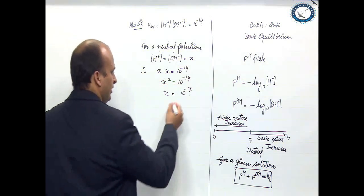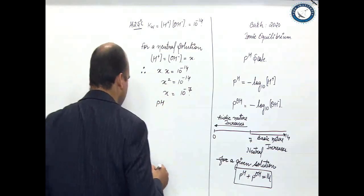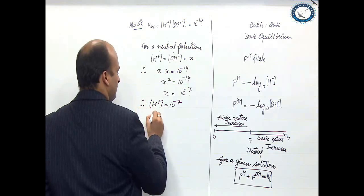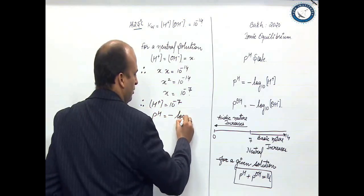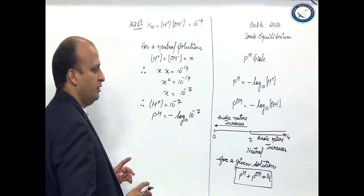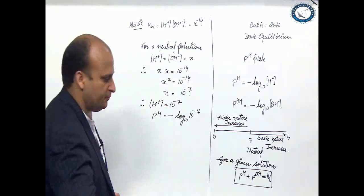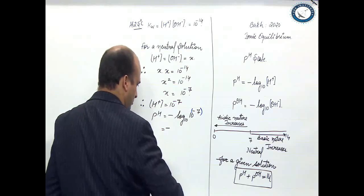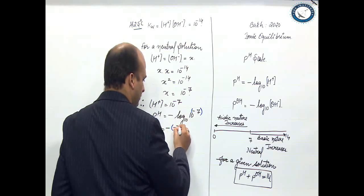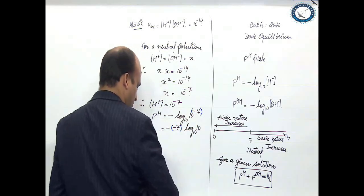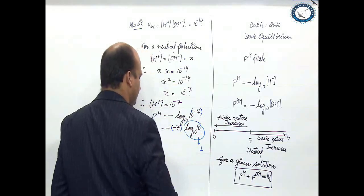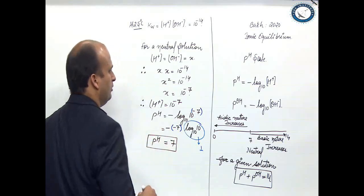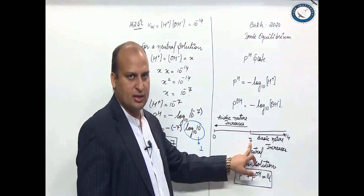Thus x comes out to be 10 raise to the power minus 7. So if x is 10 raise to the power minus 7, the H plus concentration is equal to 10 raise to the power minus 7. Therefore, pH is equal to minus log to the base 10 of 10 raise to the power minus 7. This can be written as minus of minus 7 log to the base 10 of 10. The value of log 10 is 1. So this is minus into minus, which is plus. The value comes out to be 7. So pH is 7 — for a neutral solution the pH comes out to be 7. This is the answer to the first question: why the pH of a neutral solution is 7 at 25 degree Celsius.